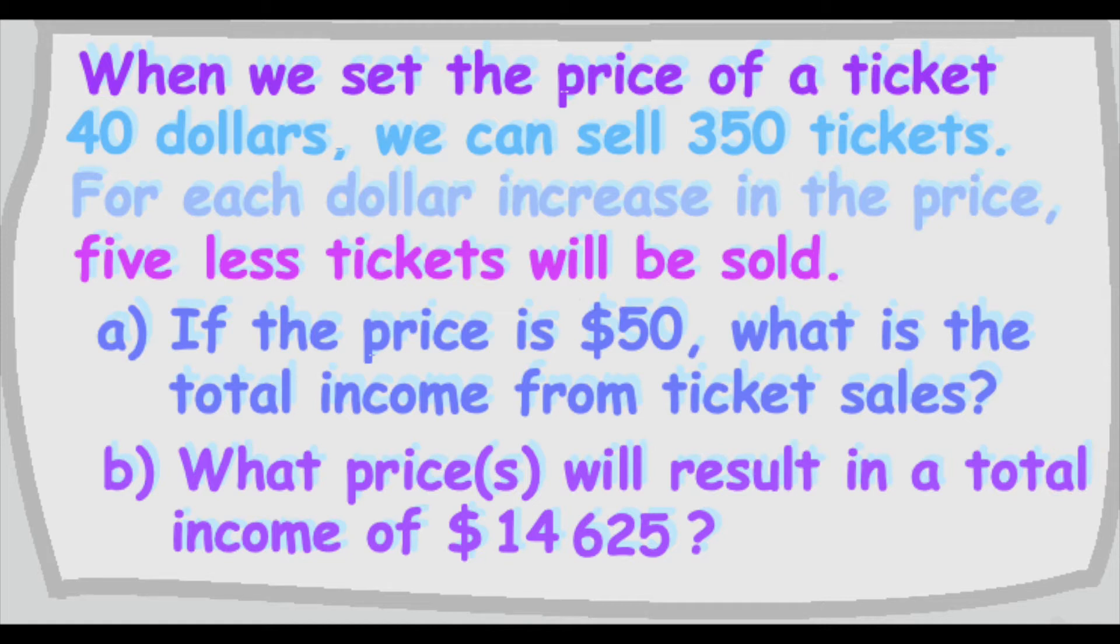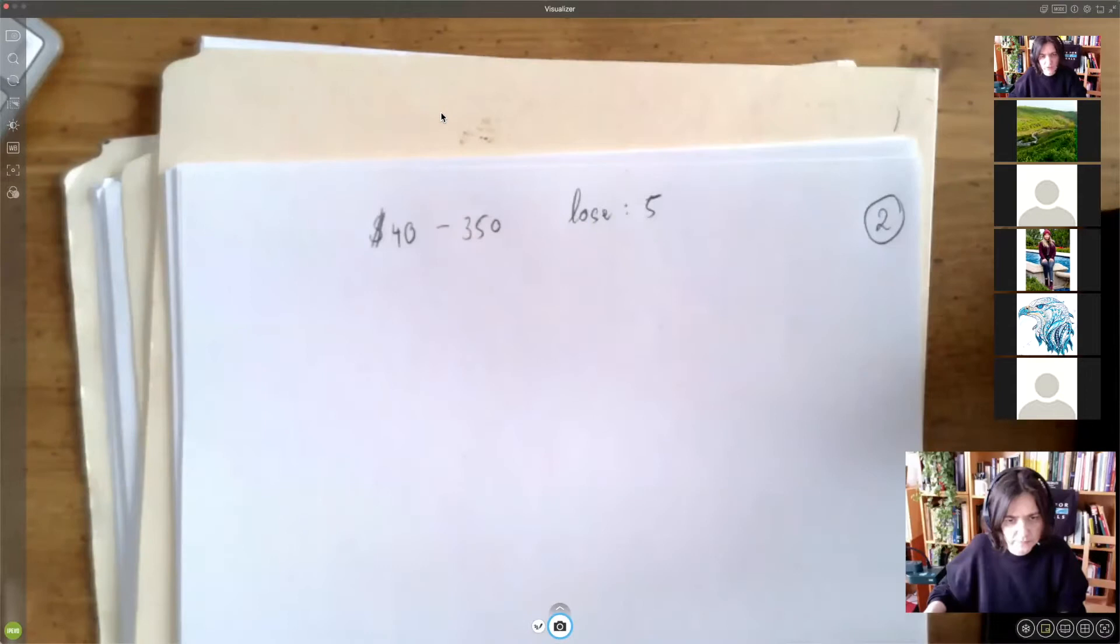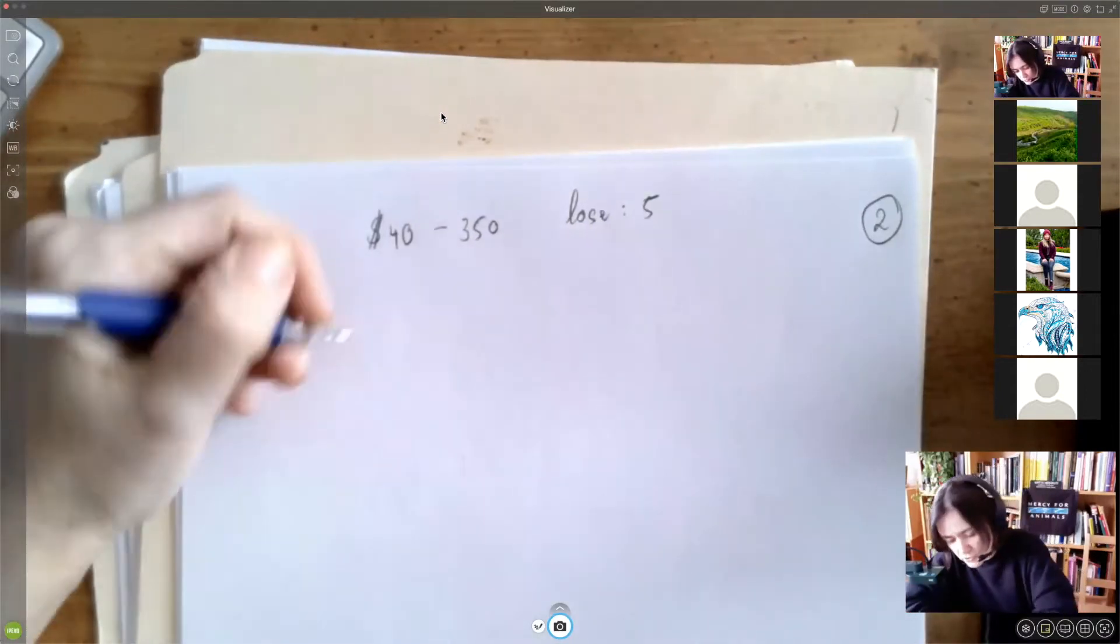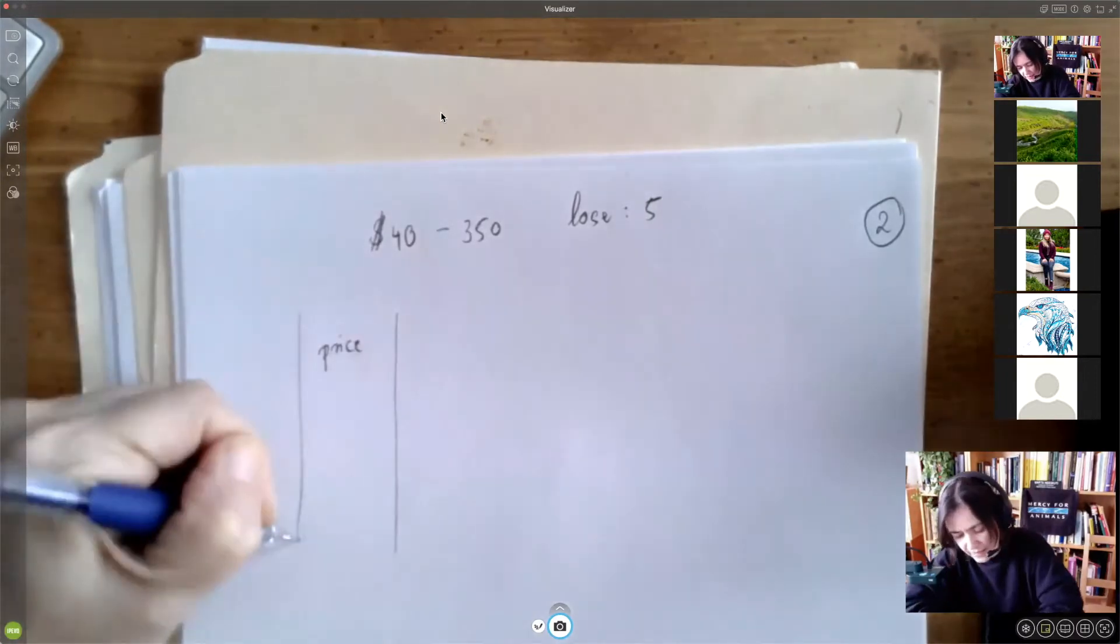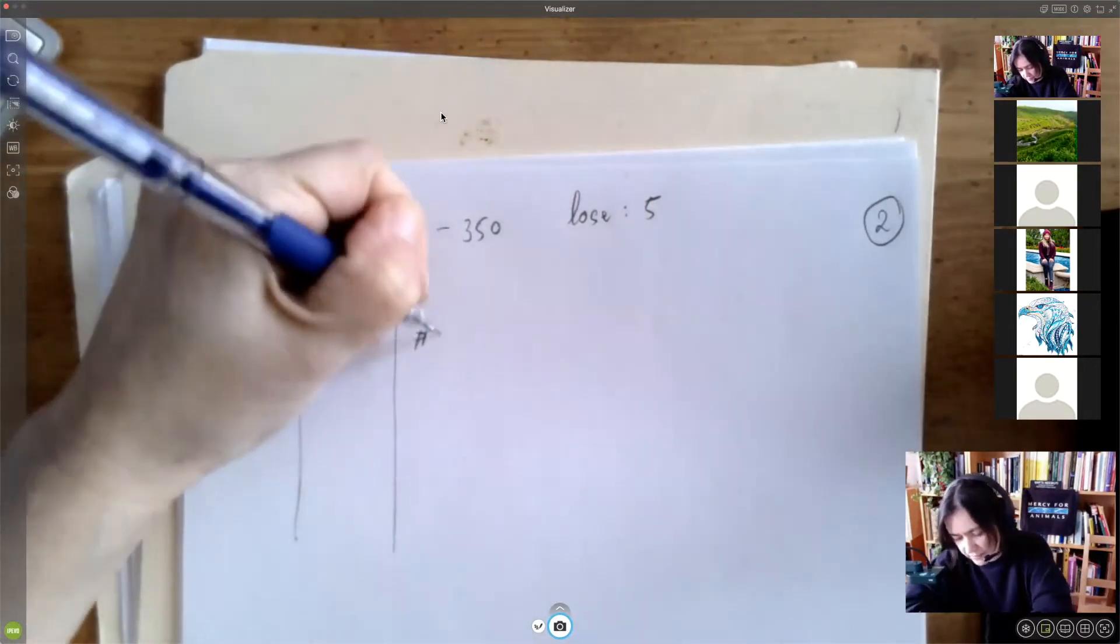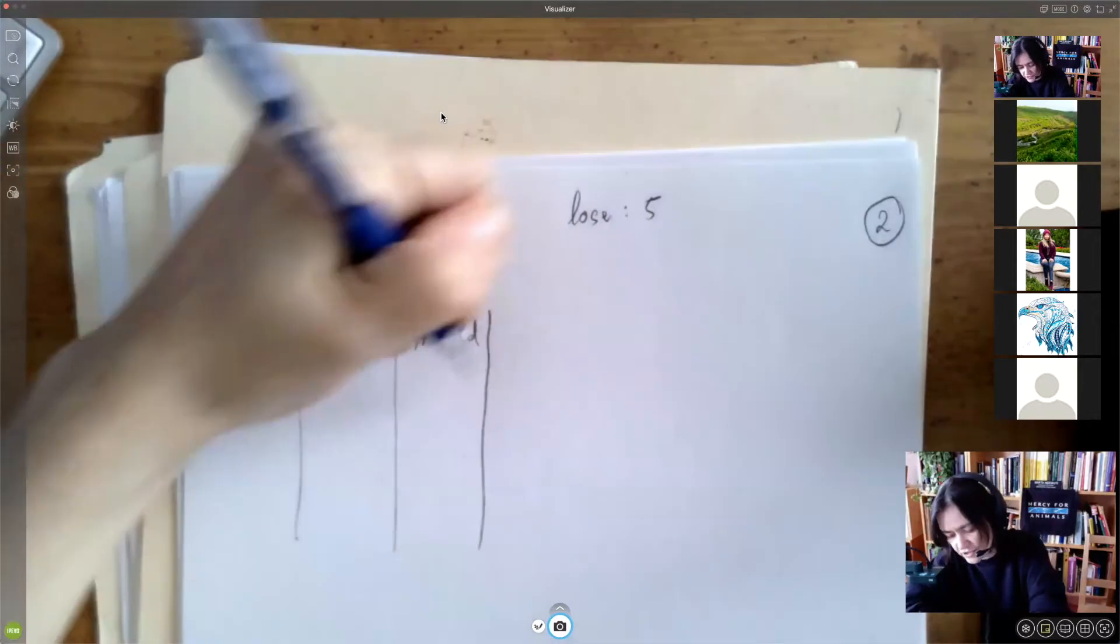And this problem could be one of the first problems in your business calculus class by ways of reviewing. So the trick is what we call X. So it says that if we increase the price by $1, we're going to lose five tickets.